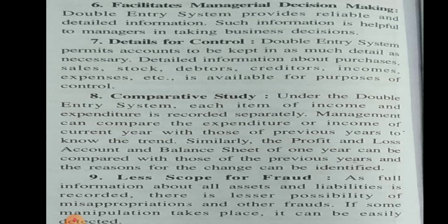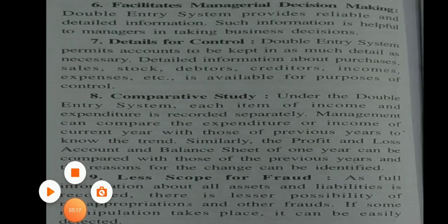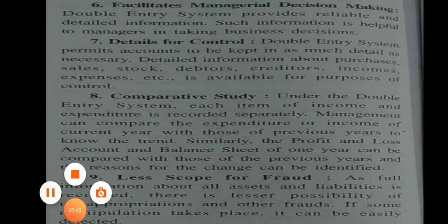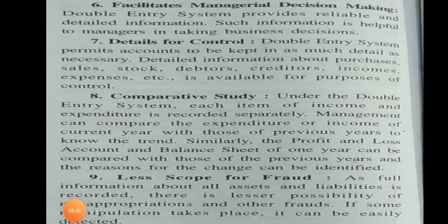The eighth point is comparative study. Under the double entry system, each item of income and expenditure is recorded separately. Management can compare the expenditures or income of the current year with those of the previous year to note the trend. Similarly, the profit and loss account and balance sheet of one year can be compared with those of the previous year, and the reasons for the changes can be identified.